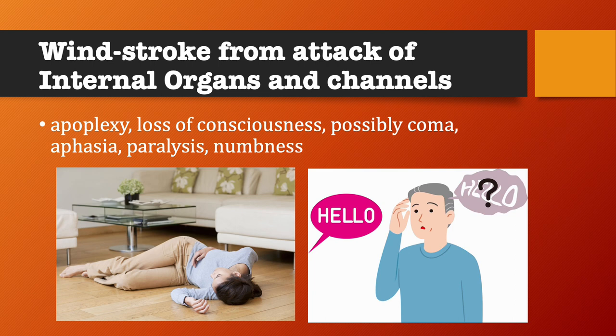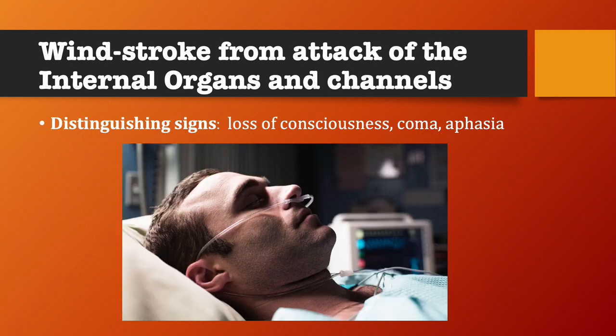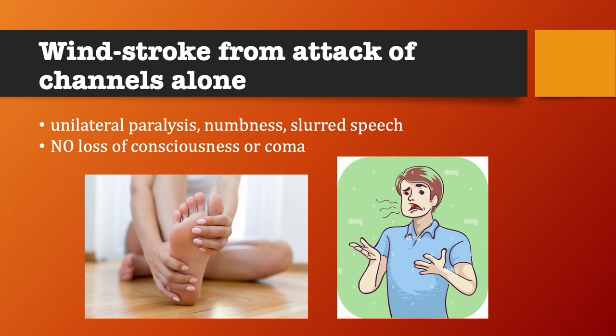Windstroke from attack of internal organs and channels will have apoplexy, loss of consciousness, possibly coma, aphasia, paralysis and numbness as clinical manifestations. The distinguishing signs of attack of the internal organs by wind are loss of consciousness, coma, and aphasia. Windstroke from attack of channels alone will include unilateral paralysis, numbness, and slurred speech as clinical manifestations. There is no loss of consciousness or coma.